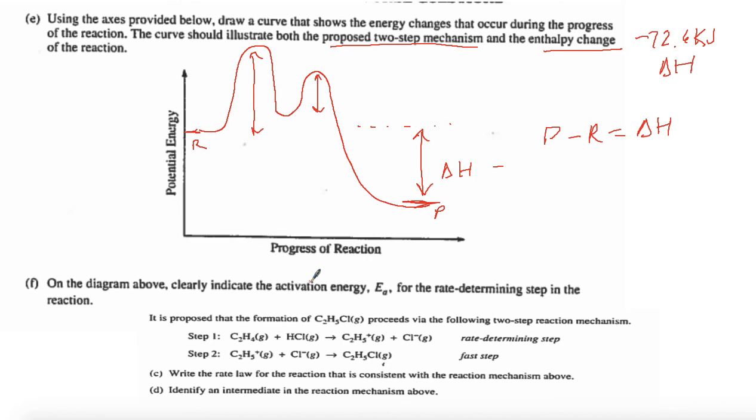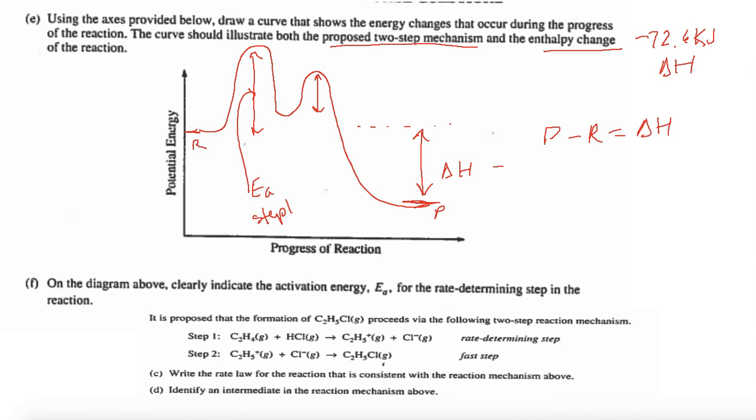On the diagram above, clearly indicate the activation energy for the rate determining step in the reaction. This is the EA step one. That's all we needed to know. We're ending there. Thank you.